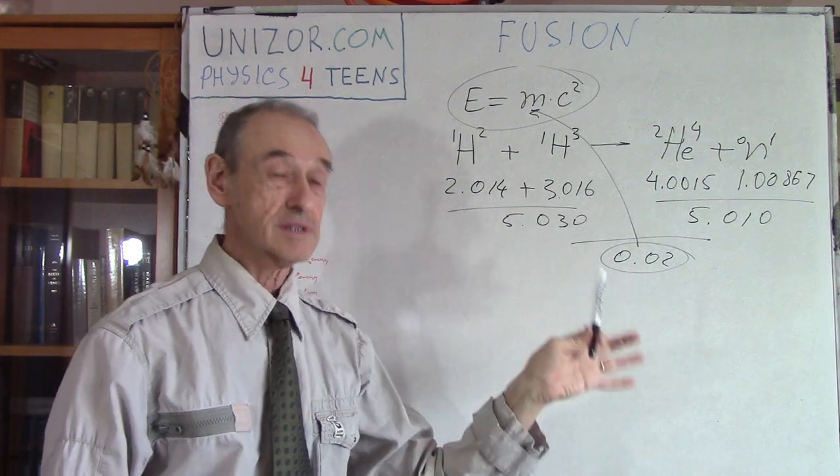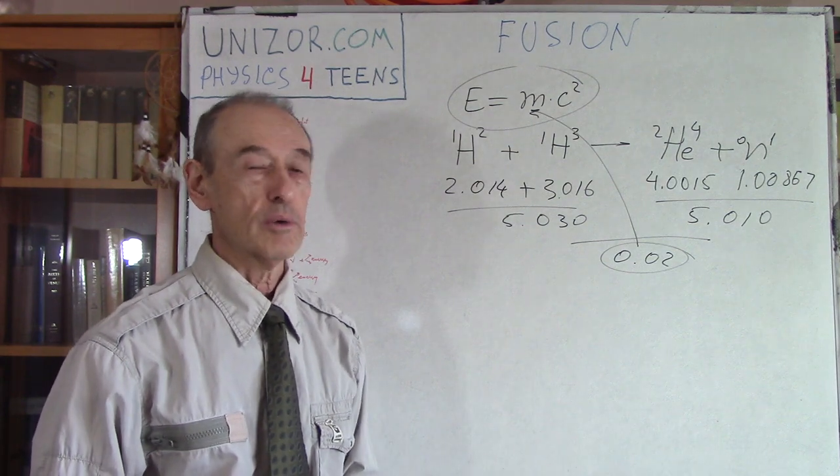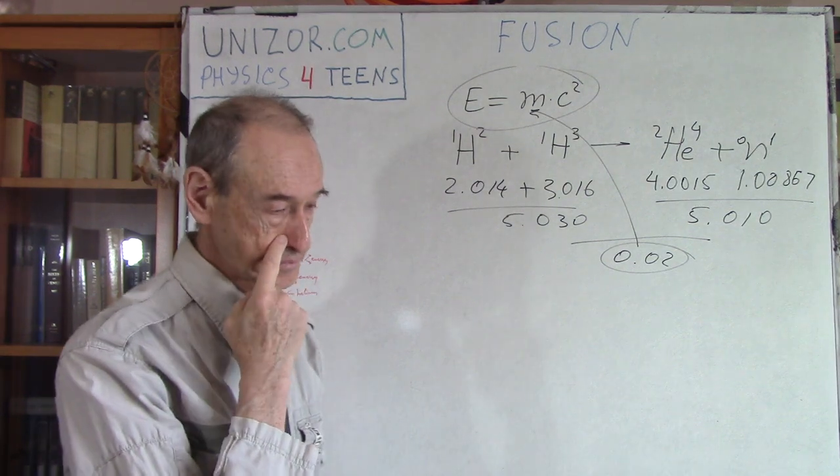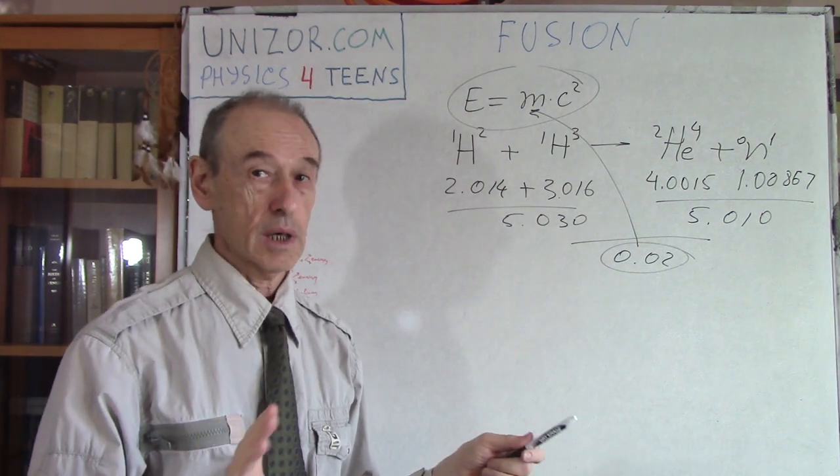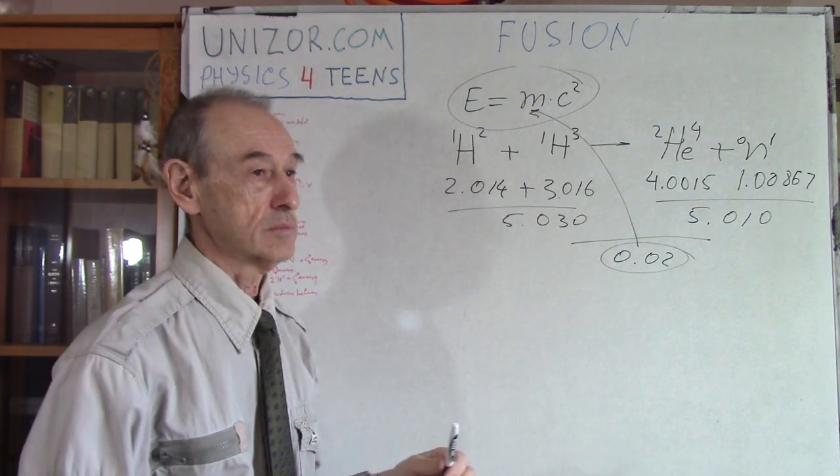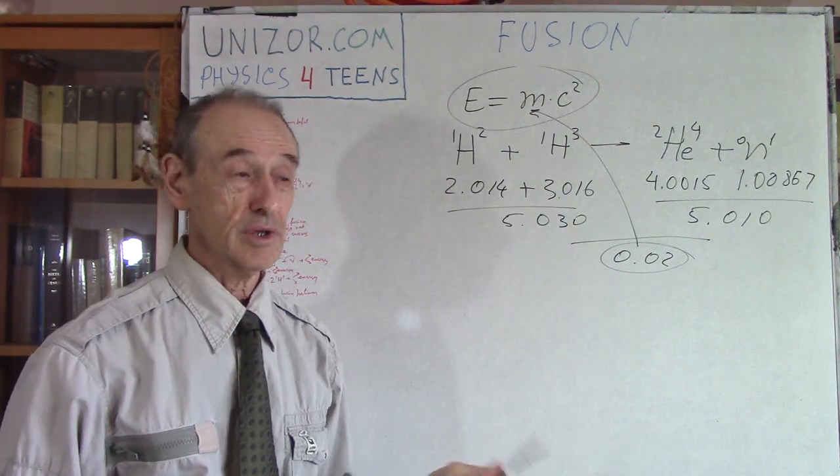The first problem is deuterium is very rare, about 0.02 percent of the total, but still we can extract deuterium from water, for example. It needs some energy but it can be done. Tritium should be created artificially, which is not easy but probably can be done, and it also requires energy.